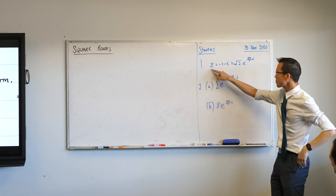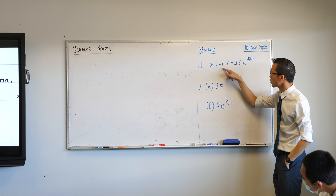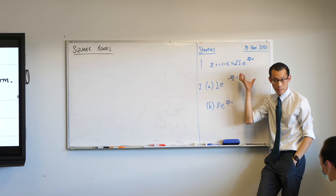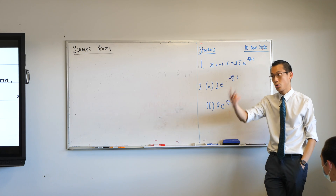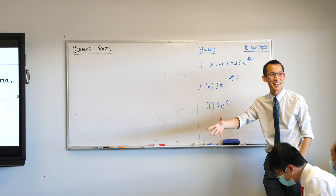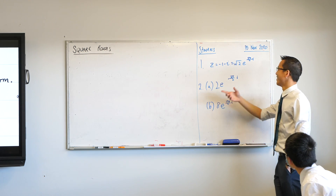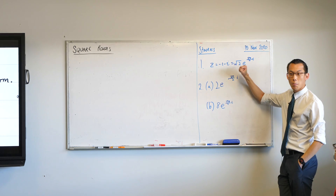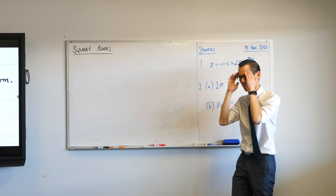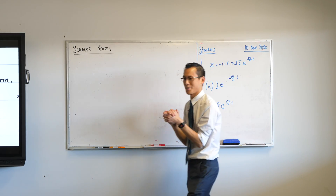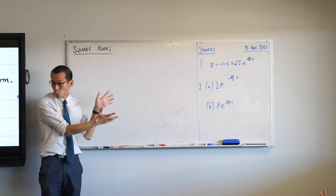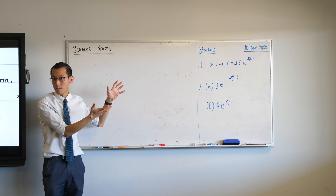The first one we're looking at here: z equals minus 1 minus i. In exponential form, there are two components that go into this. We've got a modulus and we've got an argument. I couldn't have asked for a better segue. The modulus is root 2. Do we agree with that?